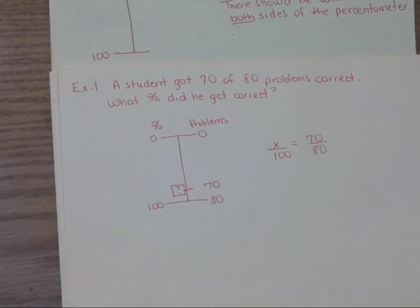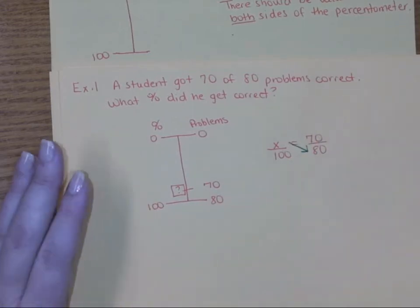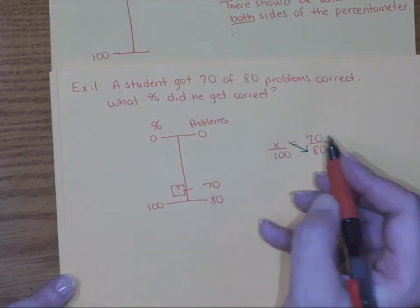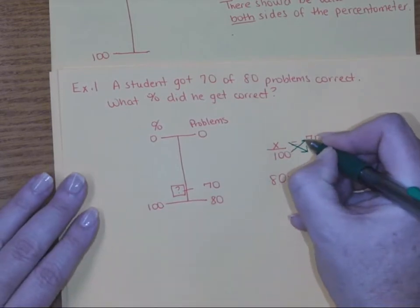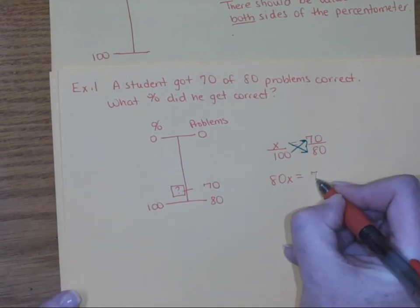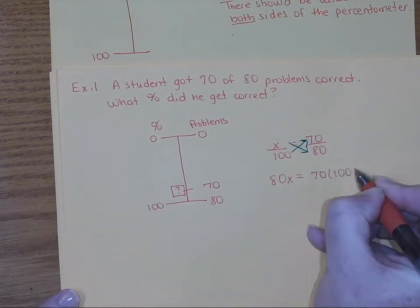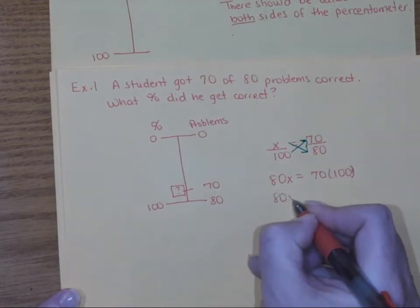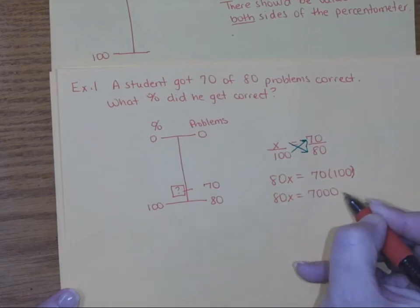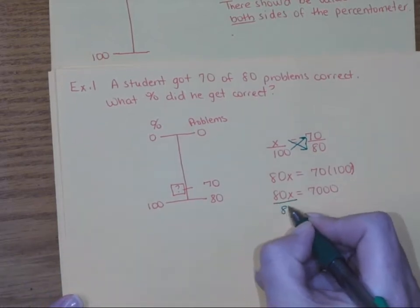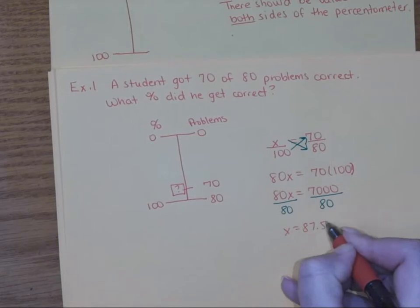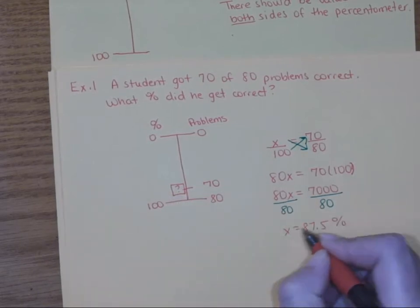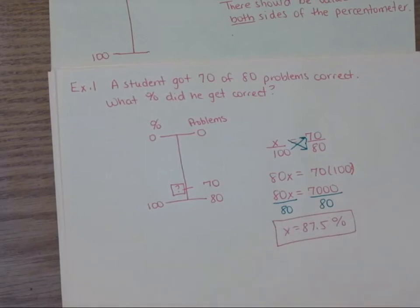So we set up the proportion: x over 100 equals 70 over 80. The cross multiply process gives us 80x equals 7000. So I'll write it out: 80x equals 7000. Then we divide by 80 — using a calculator — and we get an answer of 87.5. Notice my answer is on the percentage side, which means the answer has a percent sign.